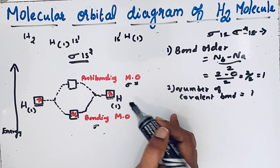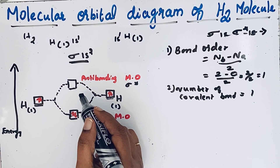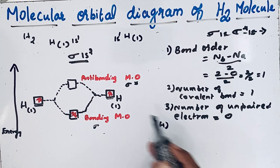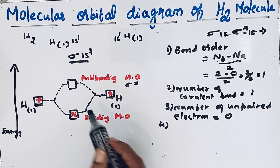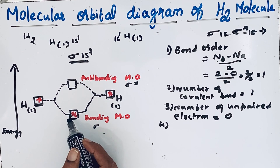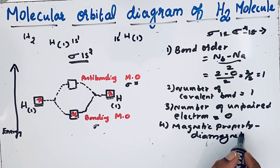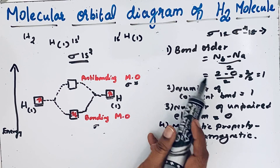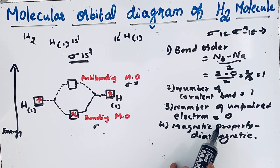We can also find the number of unpaired electrons. Here we have only bond pair electrons, so the number of unpaired electrons in hydrogen molecule is 0. Since no unpaired electrons are present, this molecule is diamagnetic. In summary: hydrogen molecule has bond order 1, one covalent bond, zero unpaired electrons, and is a diamagnetic molecule.